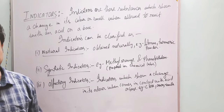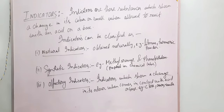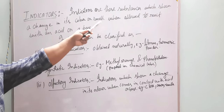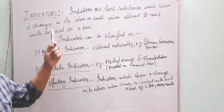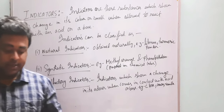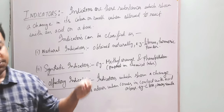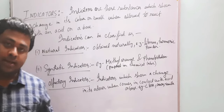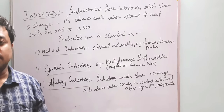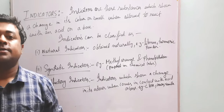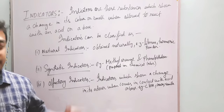In chemistry, how are we going to identify whether a given substance is an acid or a base? To know that, we need to learn about indicators. Indicators are those substances which assume a change in their color or smell when allowed to react with an acid or base. These substances show some physical changes — either change in color or change in odor.